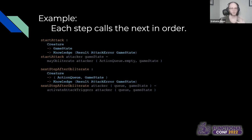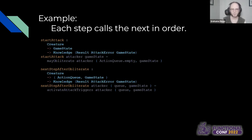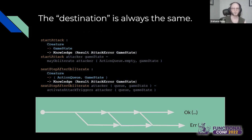To show an example of how each step calls the next in order: we have start_attack, the first function in the chain. It calls the first step, which is may_obliterate. During may_obliterate, if it's on the happy path, it calls into the next_step_after_obliterate function, which calls into the next one, and so on. The result type is always the same. In this way, we're building the basic tracks of our process.